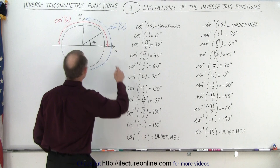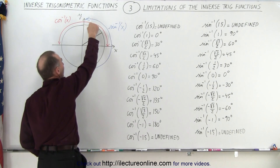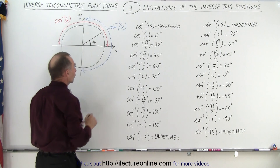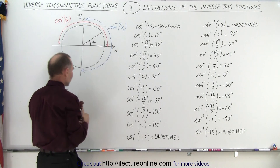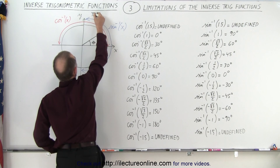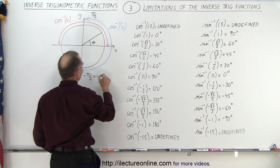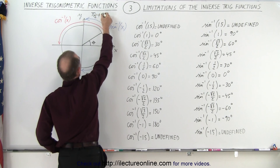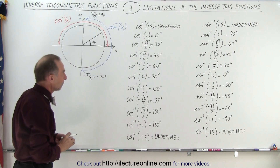In other words, the inverse sine function is valid for angles of plus 90 degrees all the way down to minus 90 degrees, but not on the other side of the unit circle. So it's only good for values between plus or minus 90 degrees, or plus pi over 2 and minus pi over 2. So that's the range of the inverse sine function — there are definitely limitations there.